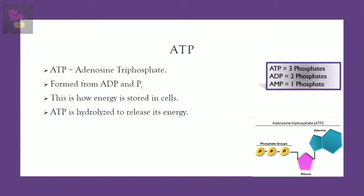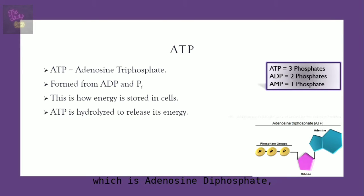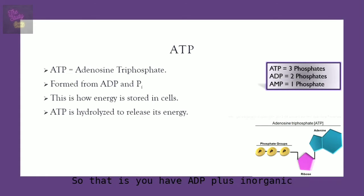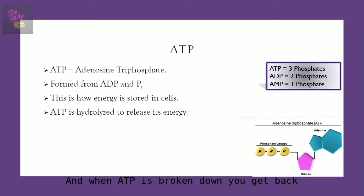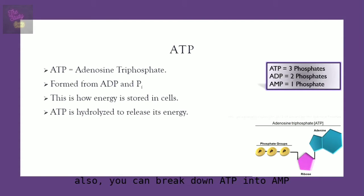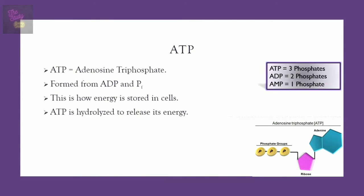ATP is the abbreviation for adenosine triphosphate, and is formed from ADP, which is adenosine diphosphate, as well as inorganic phosphate. So you have ADP plus inorganic phosphate, and that gives you ATP. When ATP is broken down, you get back ADP and inorganic phosphate. You can also break down ADP into AMP, which is adenosine monophosphate.